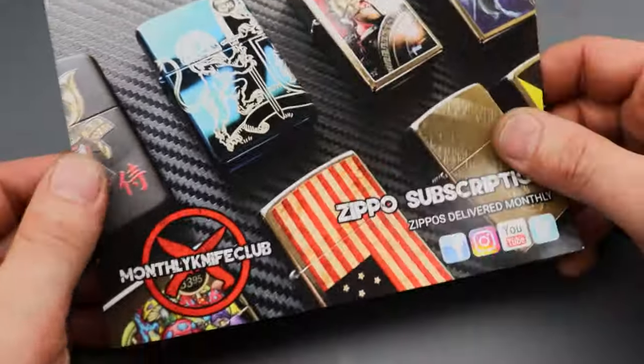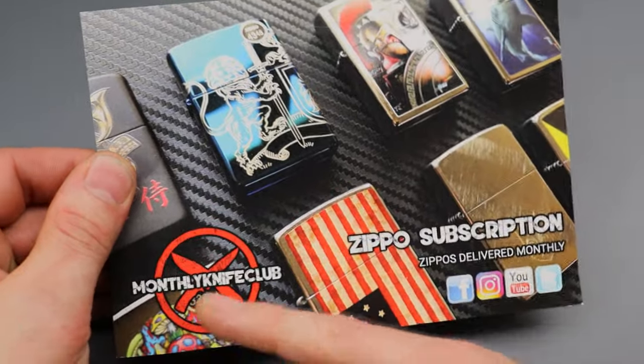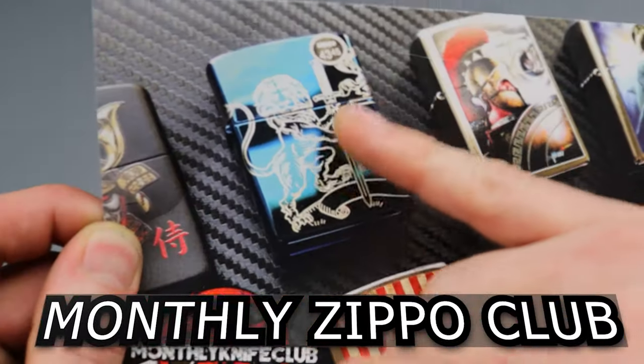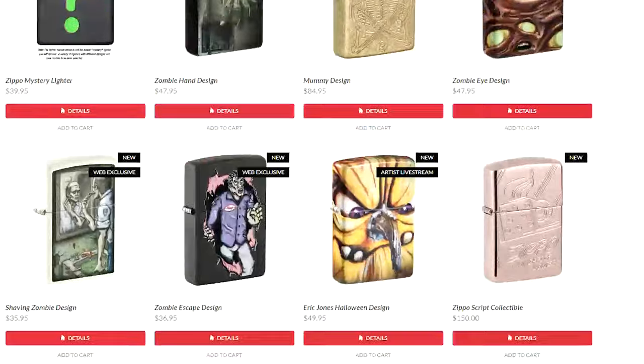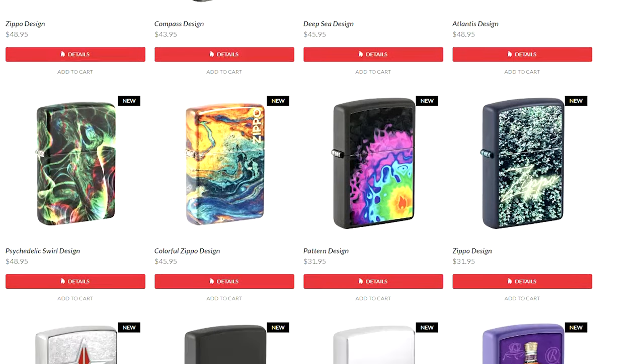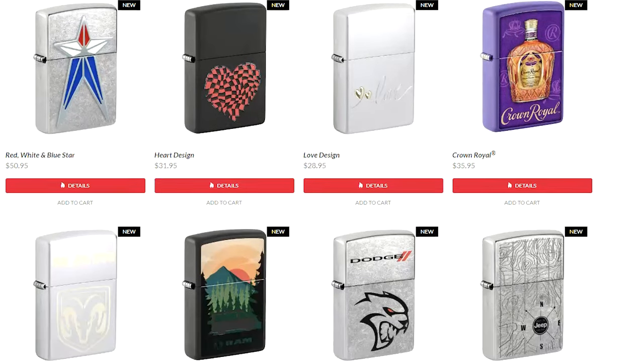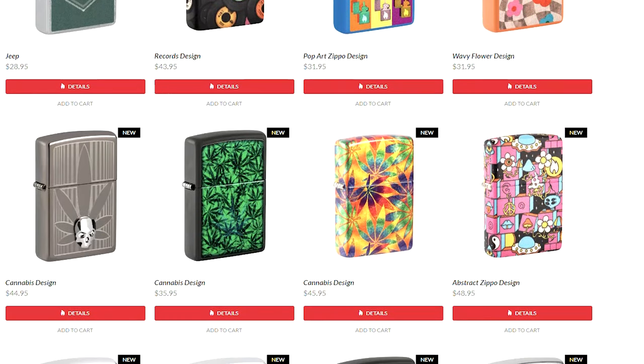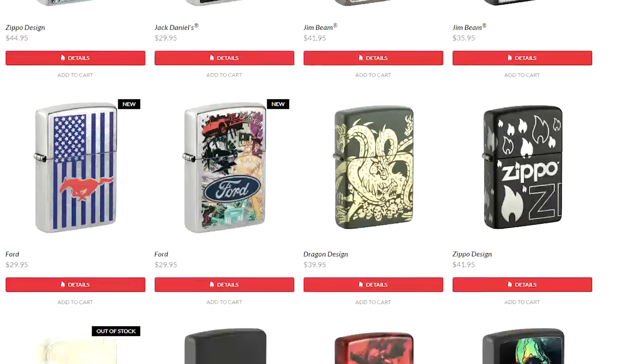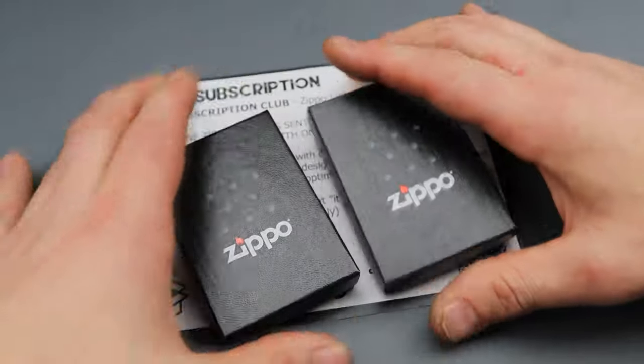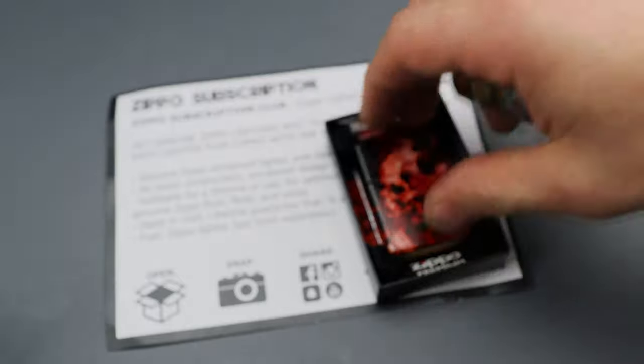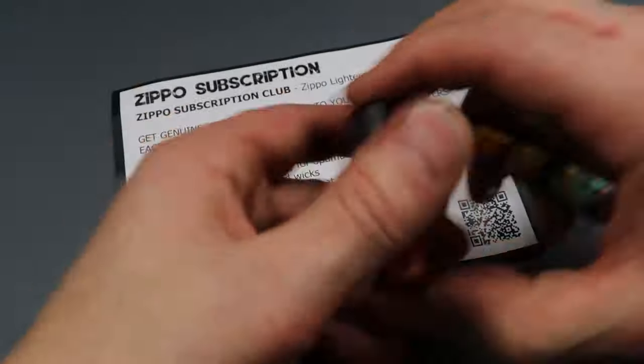Now this next thing is actually pretty cool. You might've heard of monthly knife club, but have you heard of the monthly Zippo club where you can get random Zippos? Zippos come in all different kinds. I personally used to collect Zippos back in the day. I used to have a ton of different designs. So if you are into Zippos or lighters period, you can get a monthly subscription to real authentic Zippos, 100% USA made. They got a lifetime warranty.